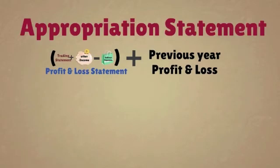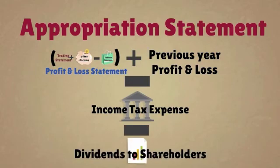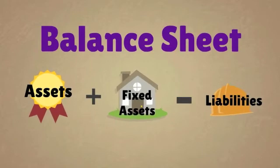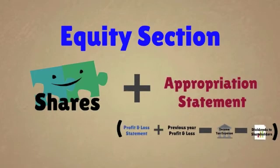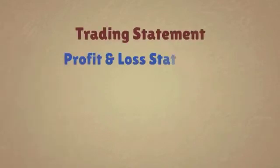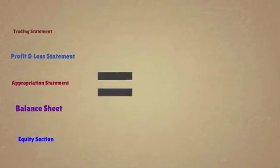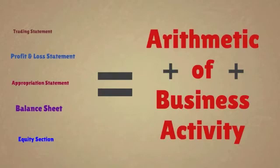Next is the appropriation statement. This is profit and loss plus profit and loss from the previous year, minus income tax expenses, minus dividends provided to your shareholders. Next is your balance sheet: your assets plus fixed assets minus liabilities. Then comes your equity section: this is shares plus the appropriation statement. The trading statement, the profit and loss statement, the appropriation statement, balance sheet, and equity section create the general ledger and the arithmetic of your business activity.